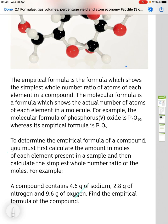So empirical and molecular formula. The empirical formula is the formula which shows the simplest whole number ratio of atoms of each element in a compound. The molecular formula is the formula which shows the actual number of atoms of each element in a molecule. For example, the molecular formula of phosphorus 5 oxide is P₄O₁₀, and its empirical formula is P₂O₅.